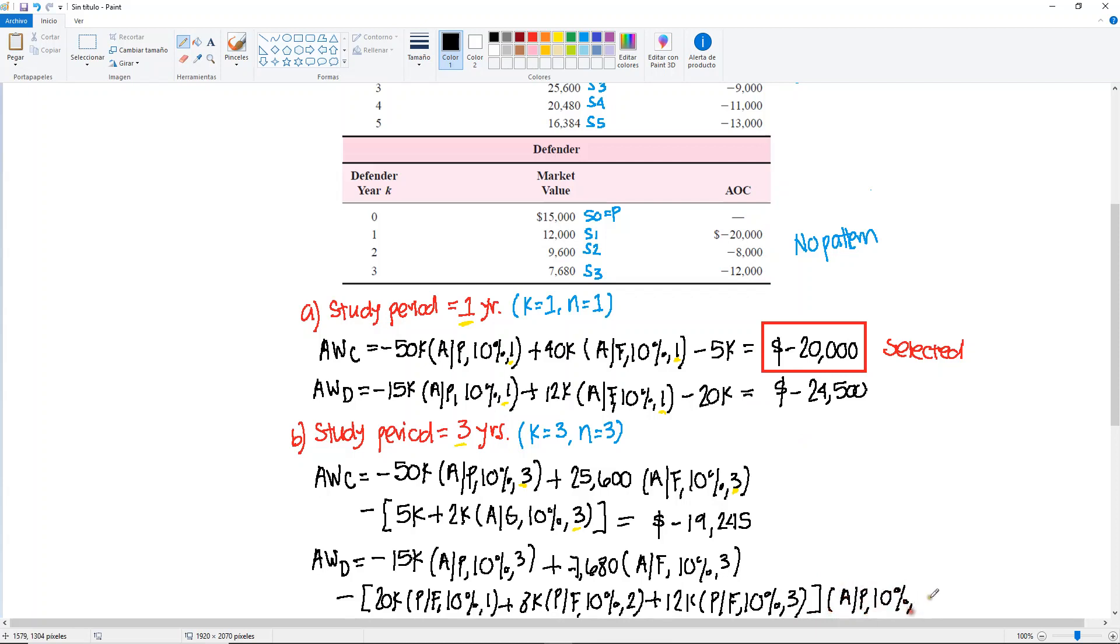We have moved all three to year zero, and now we distribute with find A given P, 10%, and this will be for three years. So then again, we have three, we have three, and we have three.